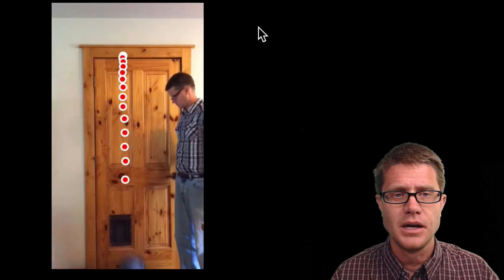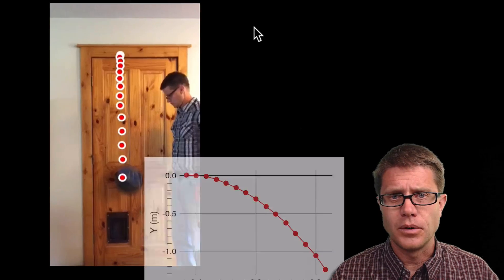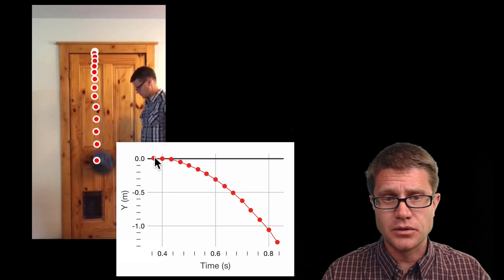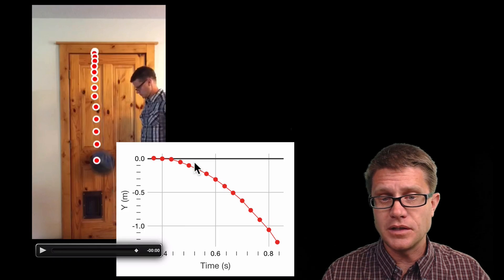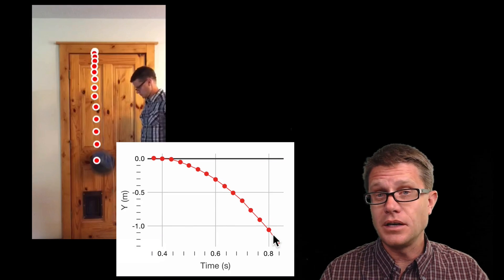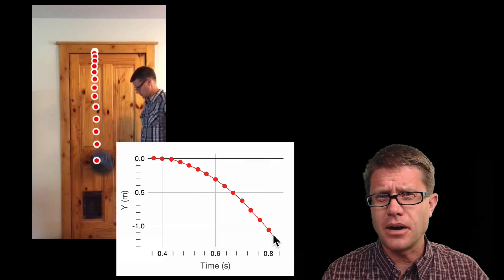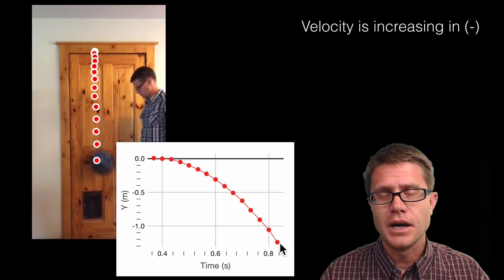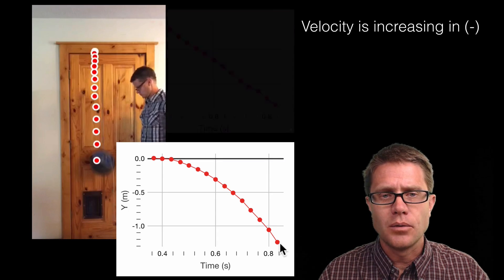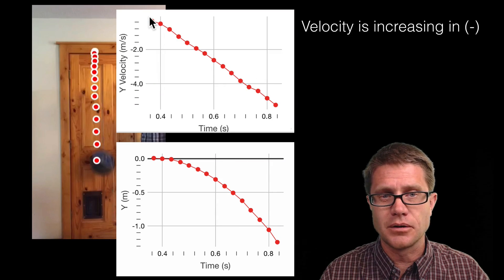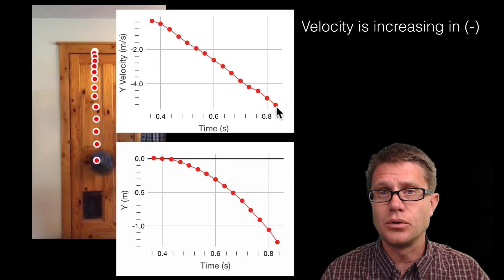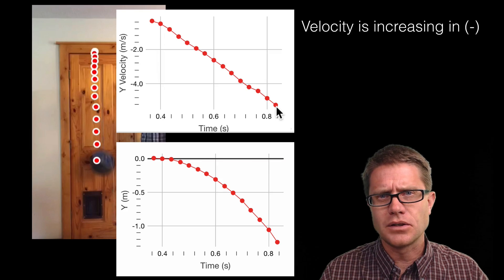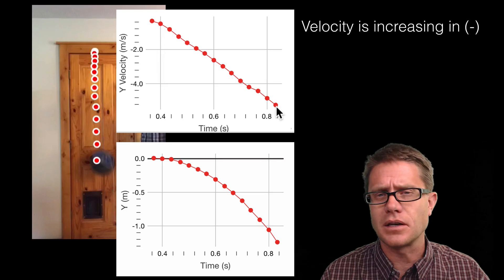Now let me show you what acceleration looks like. I took a basketball, measured and set the scale, then dropped it and marked the center of mass as it fell. The curve looks like this — I set the origin at zero, and in the first bits of time it is not moving very far at all. But we can see it is accelerating — the velocity is getting greater and greater in the negative. To find the velocity at any point, we figure out the slope of the line at that point. The slope at the beginning is zero, but it gets greater as the ball falls. I then graphed the velocity versus time, which gives a straight line, and the slope of that line gives the acceleration.